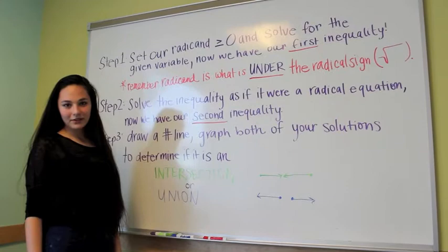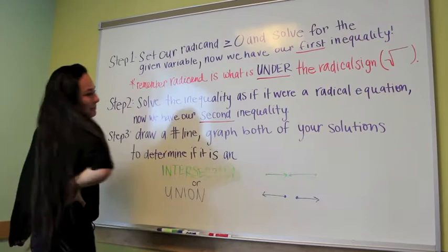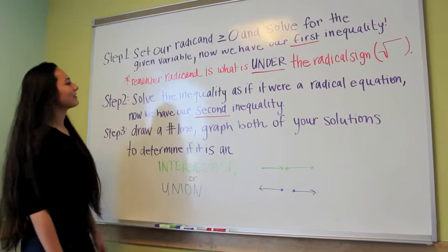So now that we have practiced a radical equation, let's try radical inequality. If the index number is odd or if the index number is even, we do these three following steps. Step 1. Set our radicand greater than or equal to 0 and solve for the given variable. This will be our first inequality.